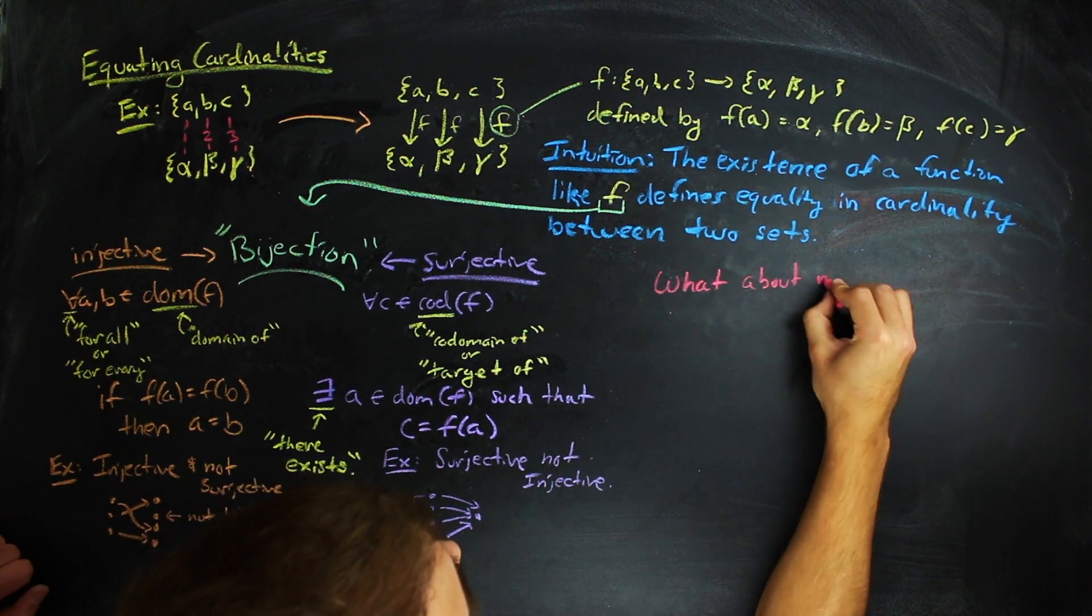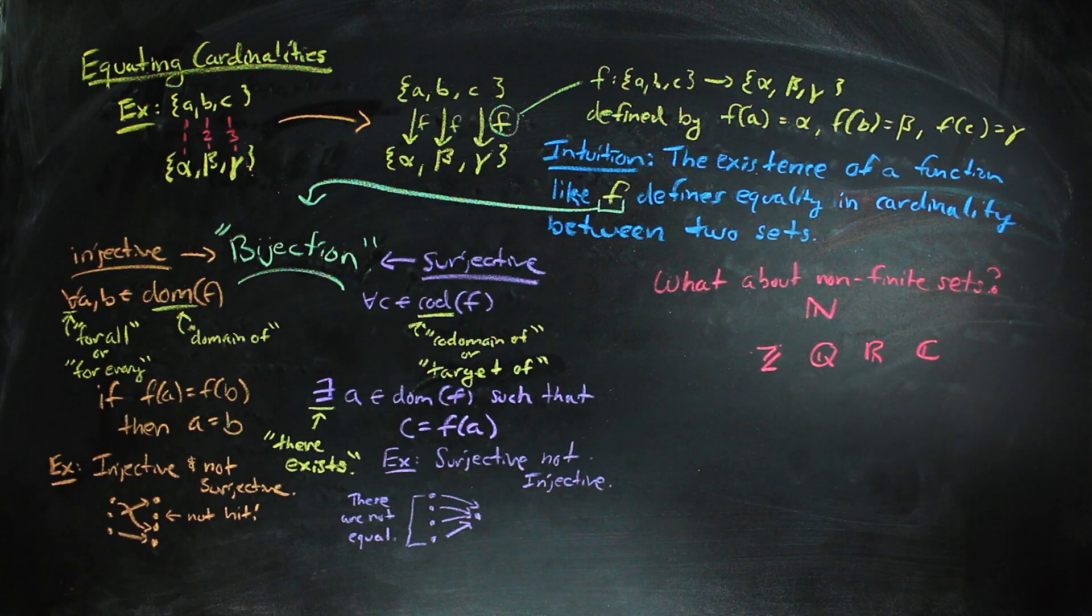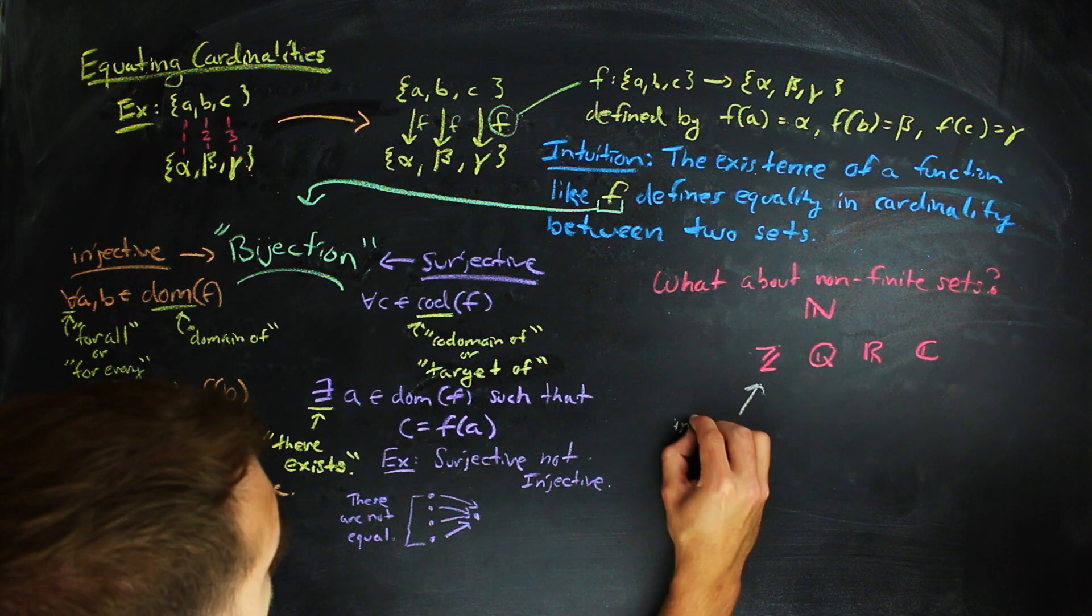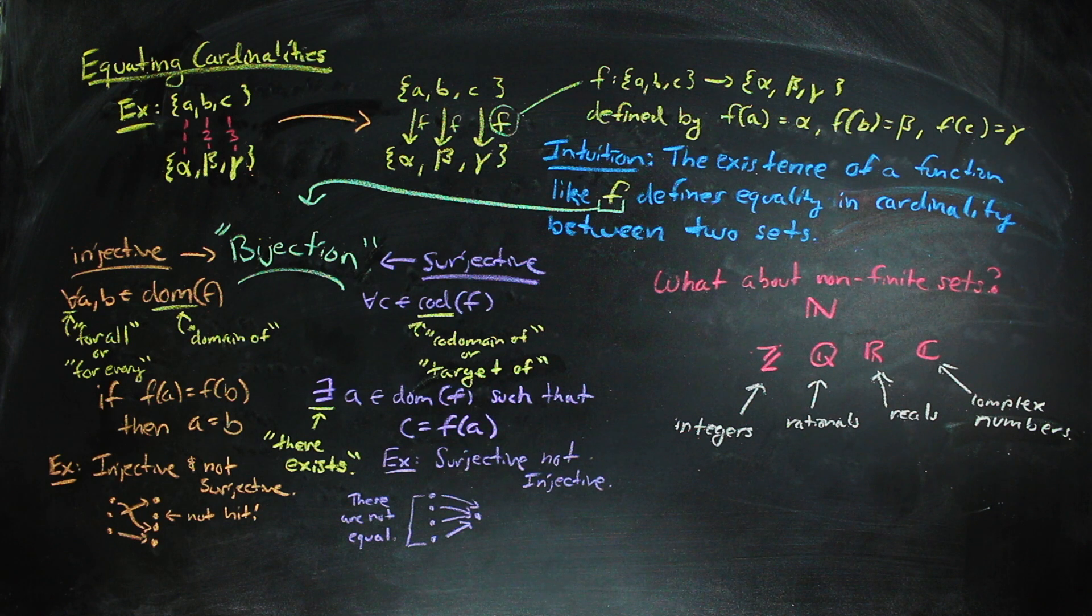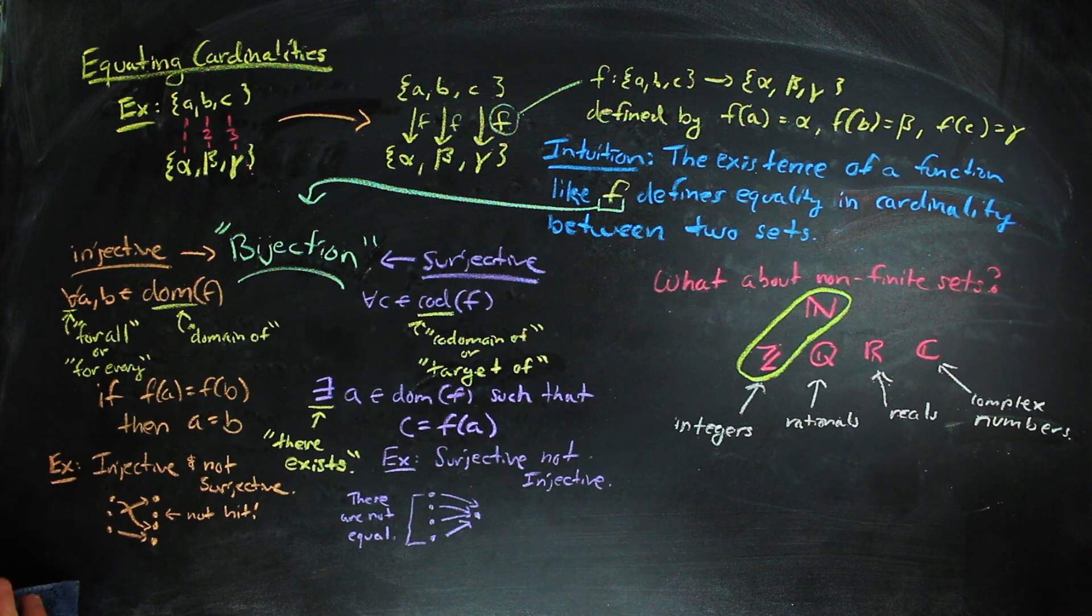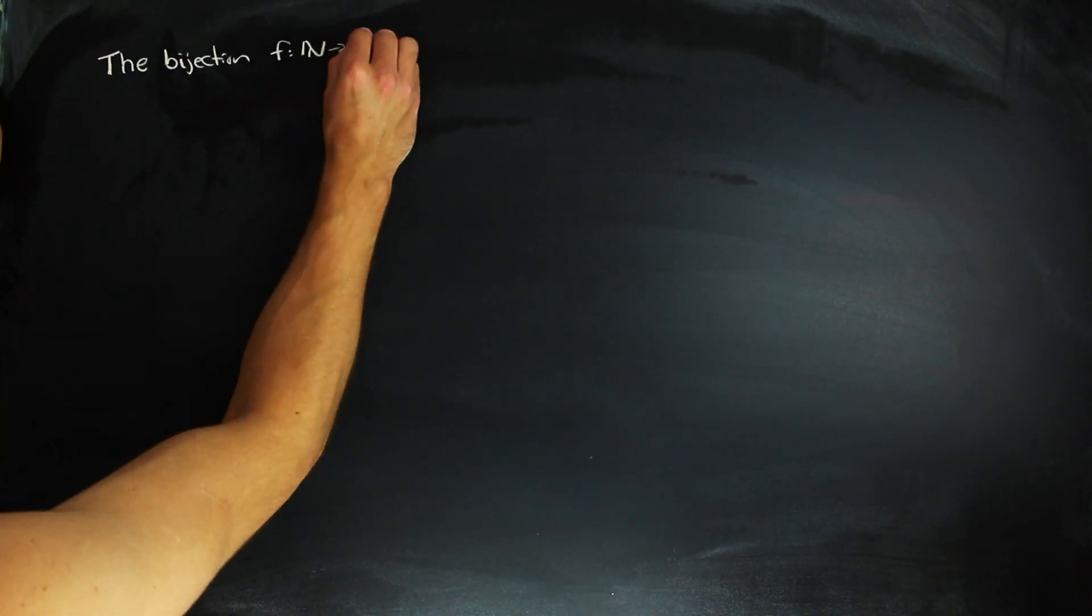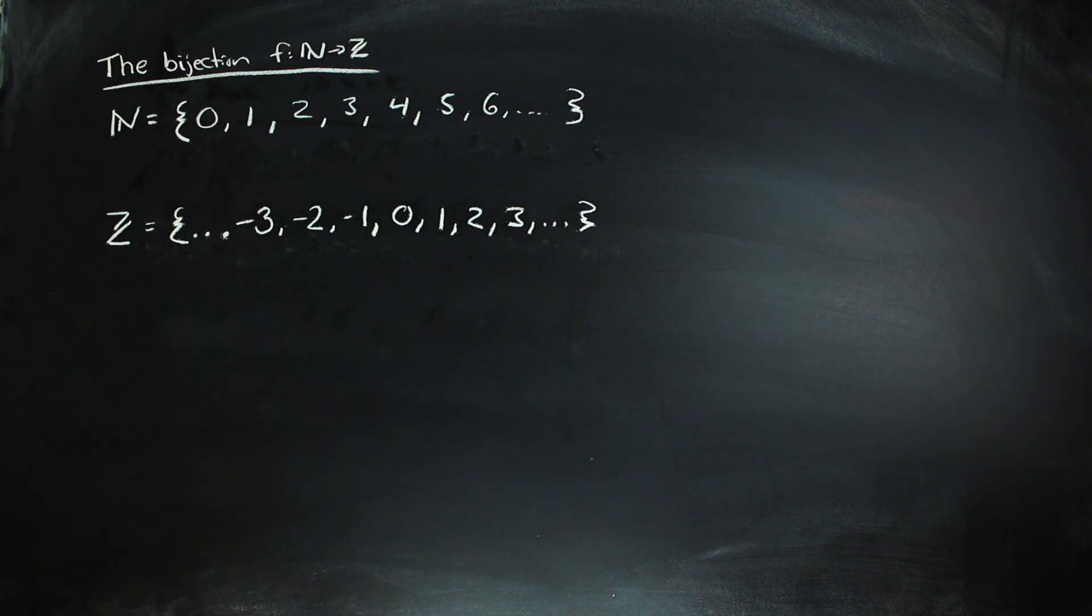Up until this point, all the examples we have been working with have been with finite sets, but you're probably wondering about the natural numbers, because I said it was a set of infinite cardinality, and what bijections exist between it and other popular sets. So, let's go ahead and first look at the integers. Your intuition may lead you to believe that the integers are twice as large as the natural numbers because of the negative numbers in the integers. But that's actually not the case.